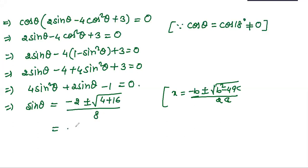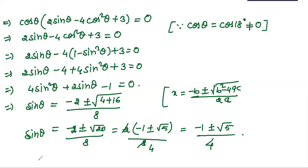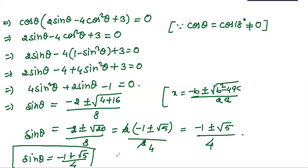We get sin θ = (−2 ± √20) / 8 = (−1 ± √5) / 4. Since θ = 18° is positive, sin 18° must be positive, so we take the positive root. Therefore sin 18° = (√5 − 1) / 4.